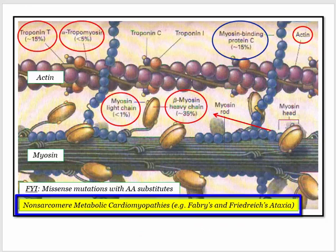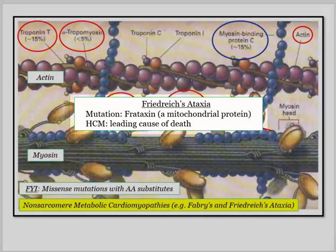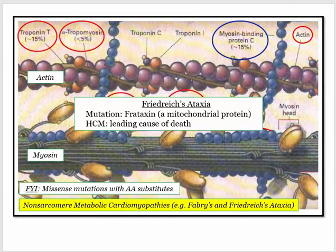There are non-sarcomere metabolic cardiomyopathies, including the lysosomal storage disorder Fabry's disease, and more importantly, Friedreich's ataxia, characterized by the frataxin mutation. Frataxin is a mitochondrial protein, so dysfunction of the mitochondria can lead to myocyte disarray and the hypertrophic phenotype. Hypertrophic cardiomyopathy is the leading cause of death in patients with Friedreich's ataxia — a neat way for the NBME to join cardiac and neuropathology. Low-yield, but worth mentioning.